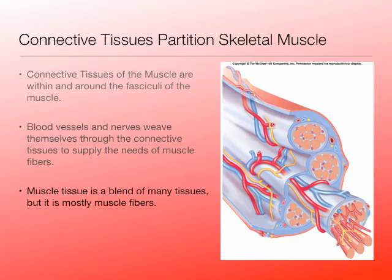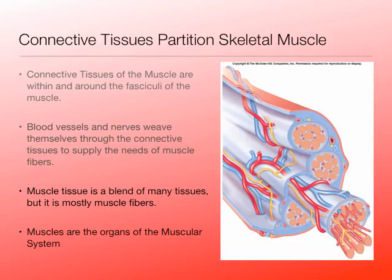All these muscle fibers need nutrition and oxygen supplied by the cardiovascular system, and we saw how nerves connect to muscles and cause them to contract. The muscle itself has many, many tissues in it — when we add nerve tissues, blood vessels with epithelial tissues, and connective tissues all together, the muscles are the organs. Muscles are the organs of the muscular system.